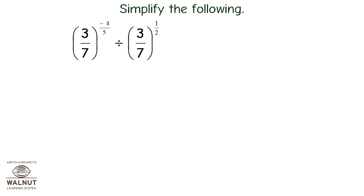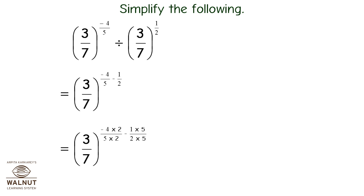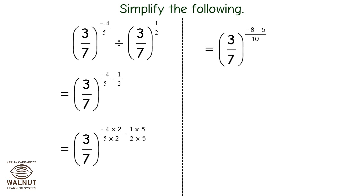Simplify: 3 upon 7 raised to minus 4 upon 5 divided by 3 upon 7 raised to 1 upon 2. This equals 3 upon 7 raised to minus 4 upon 5 minus 1 upon 2. Finding the LCD: this equals 3 upon 7 raised to minus 4 into 2 upon 5 into 2 minus 1 into 5 upon 2 into 5, which equals 3 upon 7 raised to minus 3 upon 10.